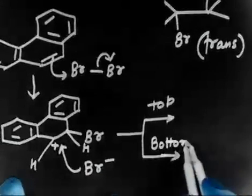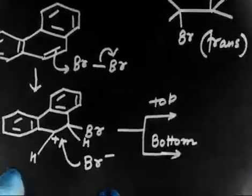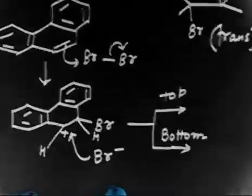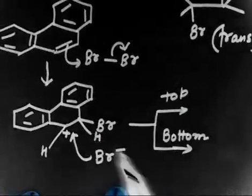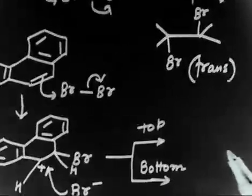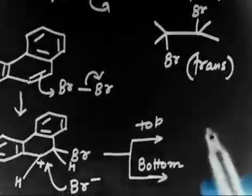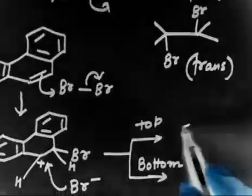In the next step Br⁻ attacks the carbocation. There are two options: it can attack from the top or it can attack from the bottom. In one case you will get the cis product, where both bromines are on the same side, and in the other case you get the trans product.